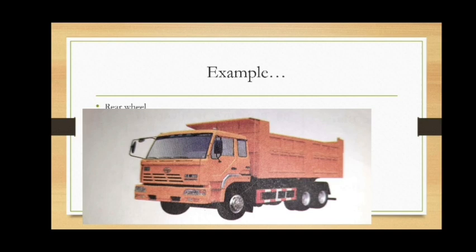For the same reason, tank trailers are provided with 16 or more wheels. Similarly, army tanks are made to move over broad steel tracks rather than on wheels, as the broad tracks increase the area of cross-section and reduce the pressure on the ground. Also, the rear wheels of tractors are made very wide because tractors work on soft ground — broad tires decrease pressure on the ground and help the tractor move in the field easily.